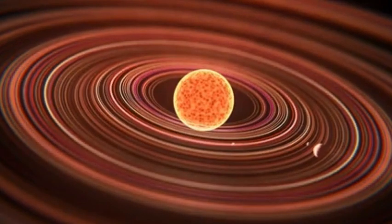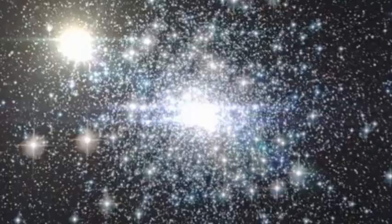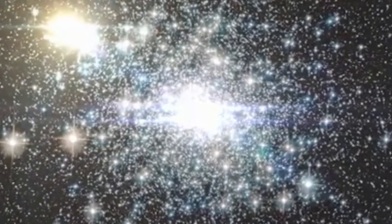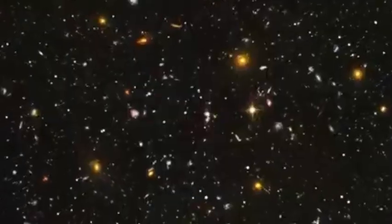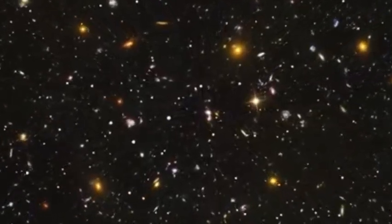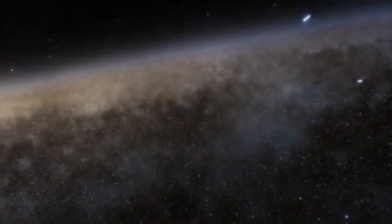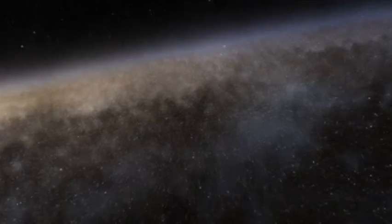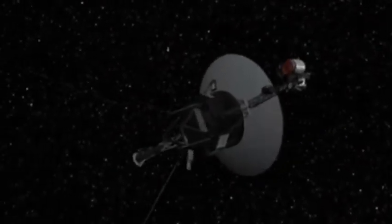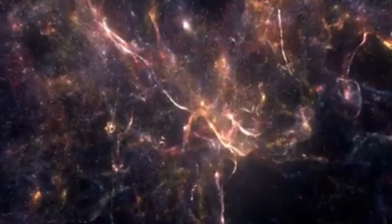It flew by Jupiter and Saturn, delivered stunning images of moons and rings, and then set off toward interstellar space. In 2012, Voyager 1 officially left the heliosphere and became the first human-made object to enter interstellar space.